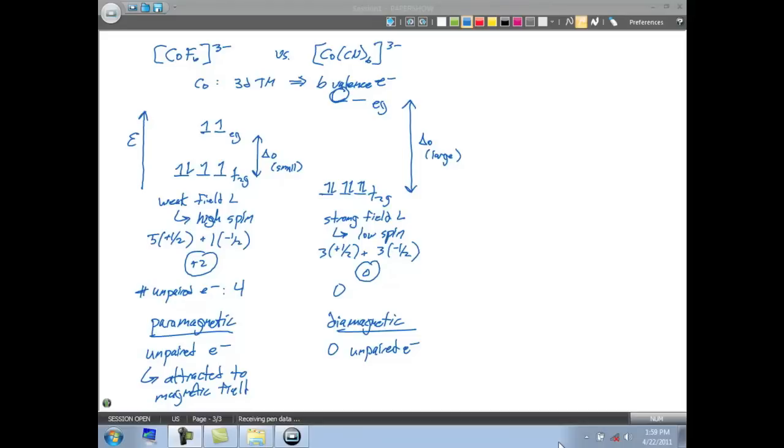if it formed a complex with fluoride, which is a weak field ligand, it would still have zero unpaired electrons. Because that's a 5D transition metal, and it's gonna have a large crystal field splitting or a large delta O as well.